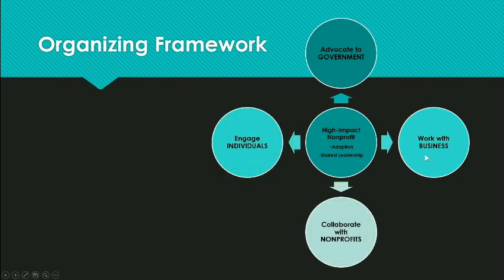Organizing the framework: after Crutchfield and Grant identified the six practices, they began to see that each of them interacts with each other in a mutually enforcing way. The authors state that like a complex organism with interdependent components, the whole is greater than the sum of its parts. One example given is that building a network of nonprofits and inspiring evangelists gives organizations even more force to influence government policy and business practices. Through shared leadership, these organizations empower each other to act on their behalf, and through adaptation, they remain relevant in an ever-changing environment.